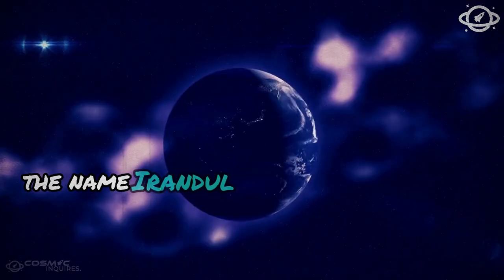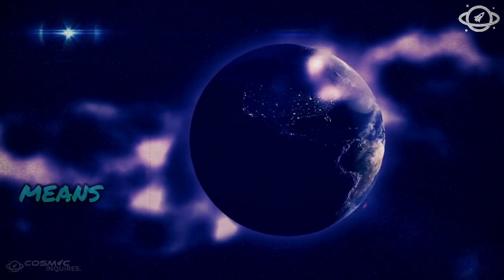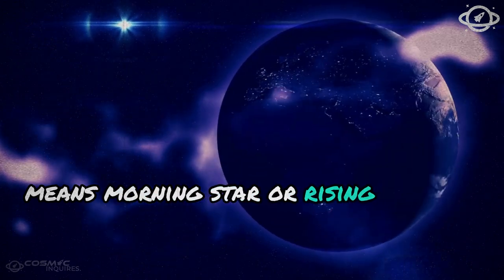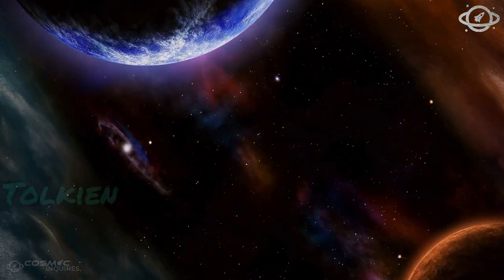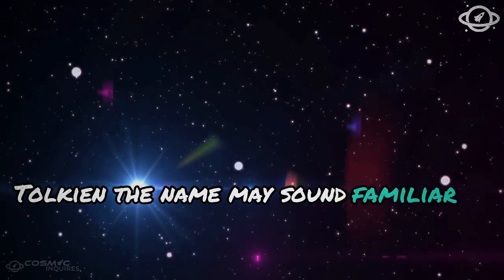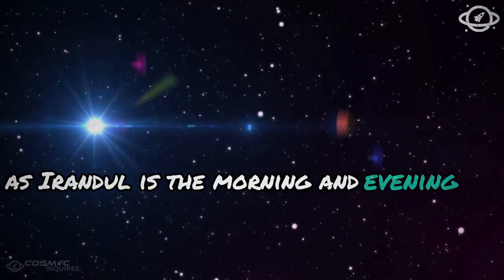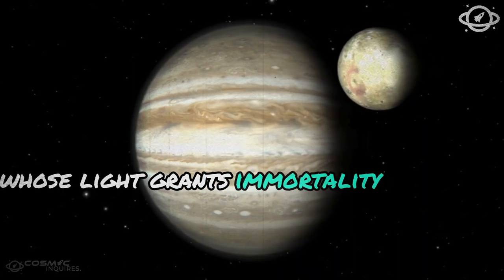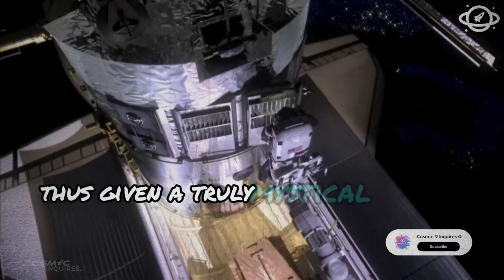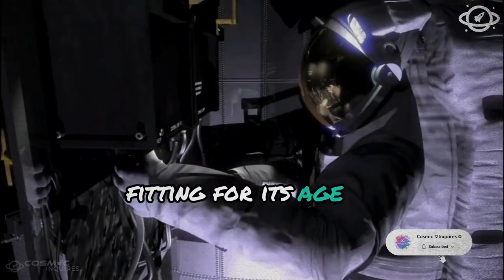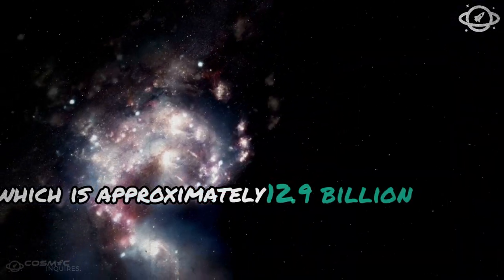The name Earendel, derived from Old English, means morning star or rising light. If you are familiar with the works of English writer J.R.R. Tolkien, the name may sound familiar, as Earendel is the morning and evening star whose light grants immortality to the elves. This celestial body was thus given a truly mystical name, fitting for its age, which is approximately 12.9 billion years.